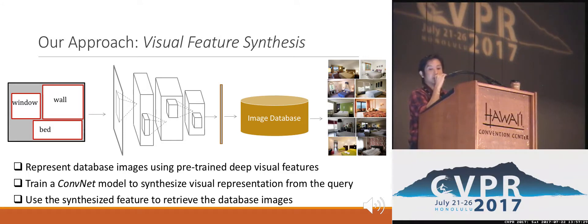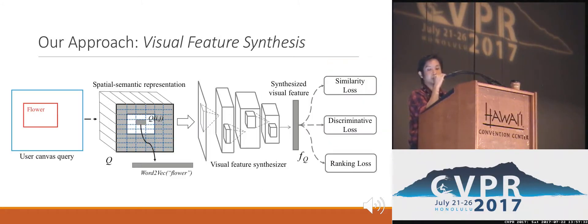In particular, our method first transforms the user canvas query into a spatial semantic representation in which the spatial location is associated with the corresponding semantic word vector. Then we train a convolutional neural network to synthesize the appropriate visual feature from the input spatial semantic representation. Our network is trained using three dedicated loss functions designed to explicitly optimize the retrieval performance on the synthesized visual feature.